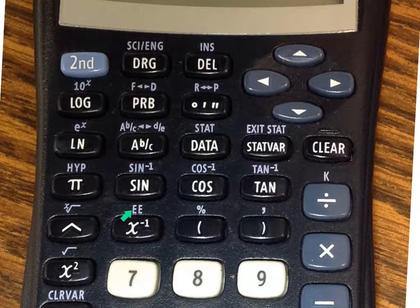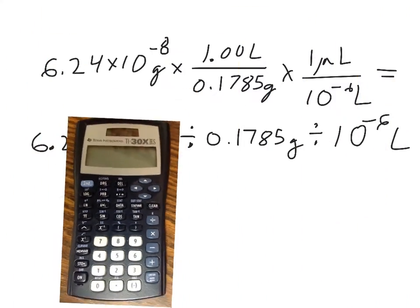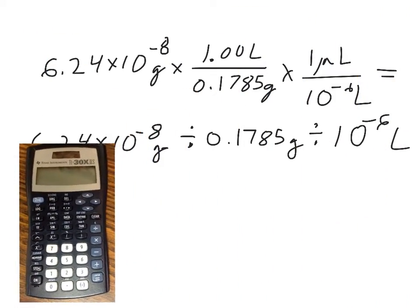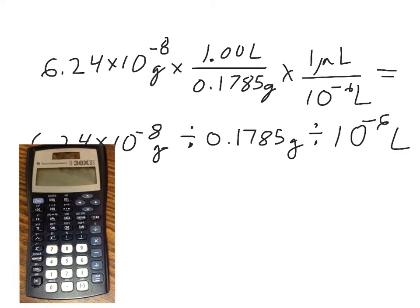So to actually use that EE symbol, you'd have to go second and then hit that X to the negative 1 key to use that EE button. The reason that EE button is so wonderful and magical is when you type that in your calculator, your calculator automatically puts 10 to the X caret in and drops parentheses.